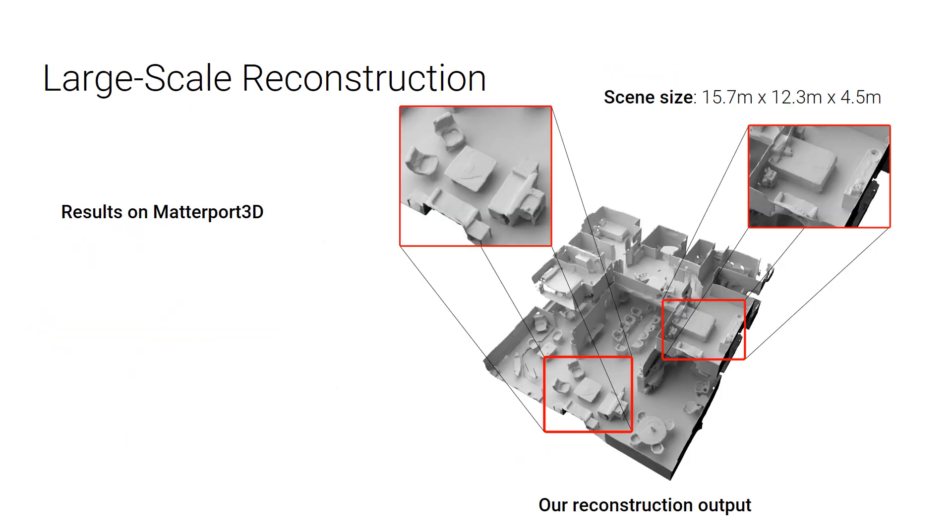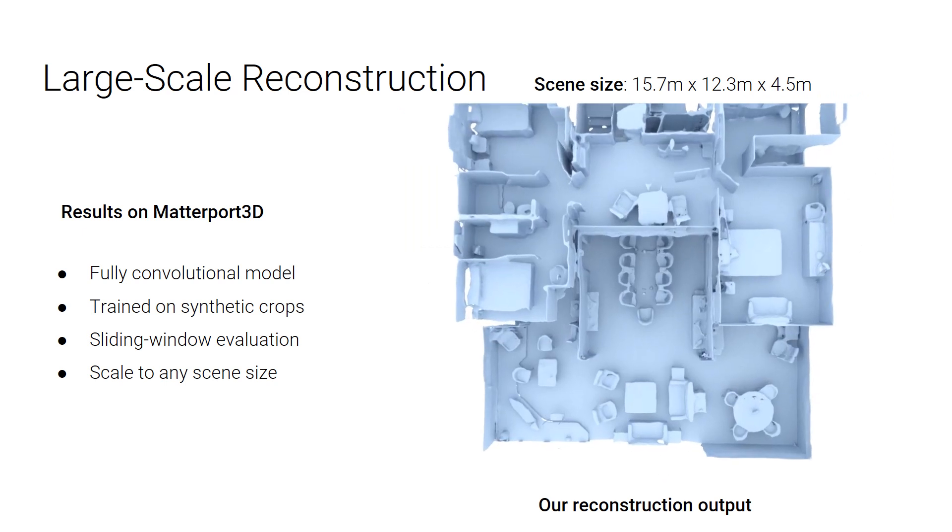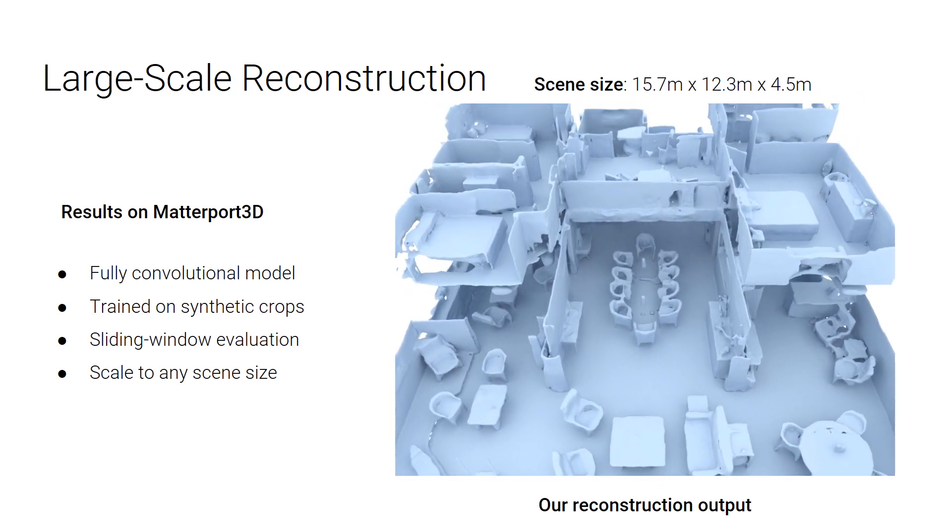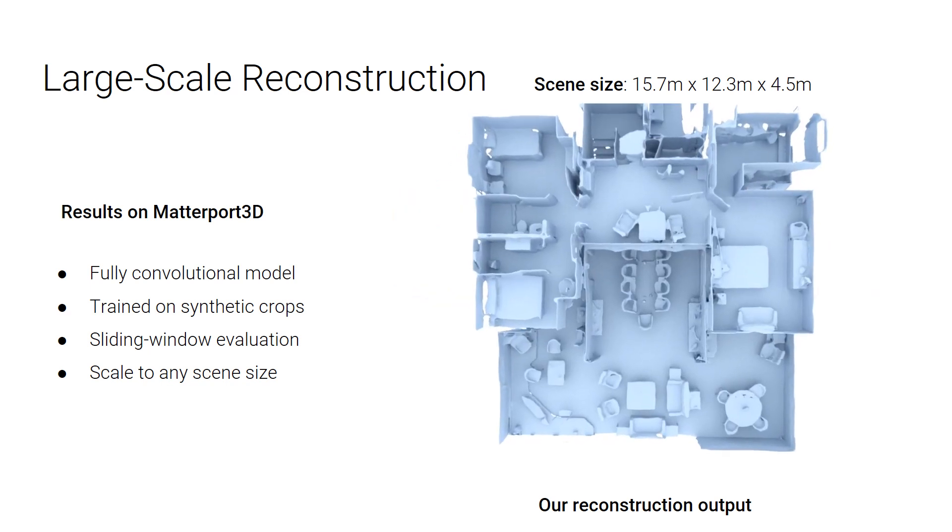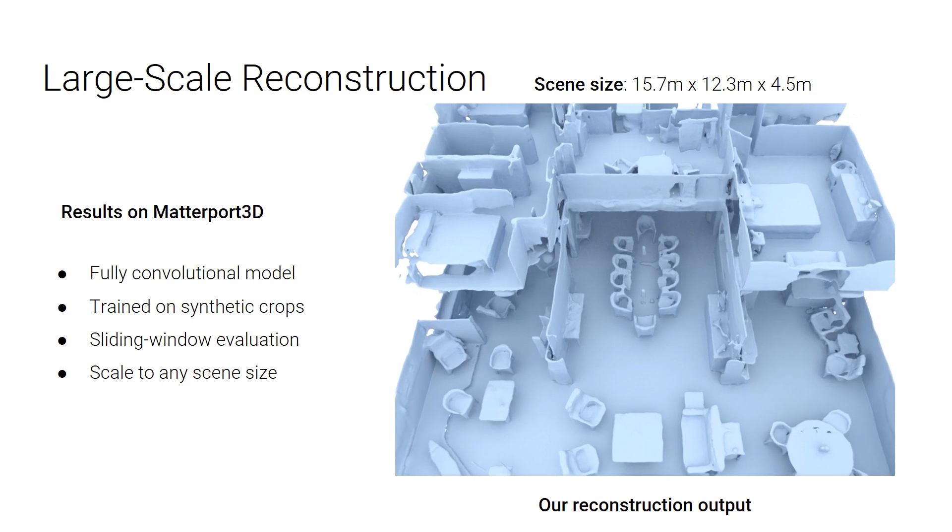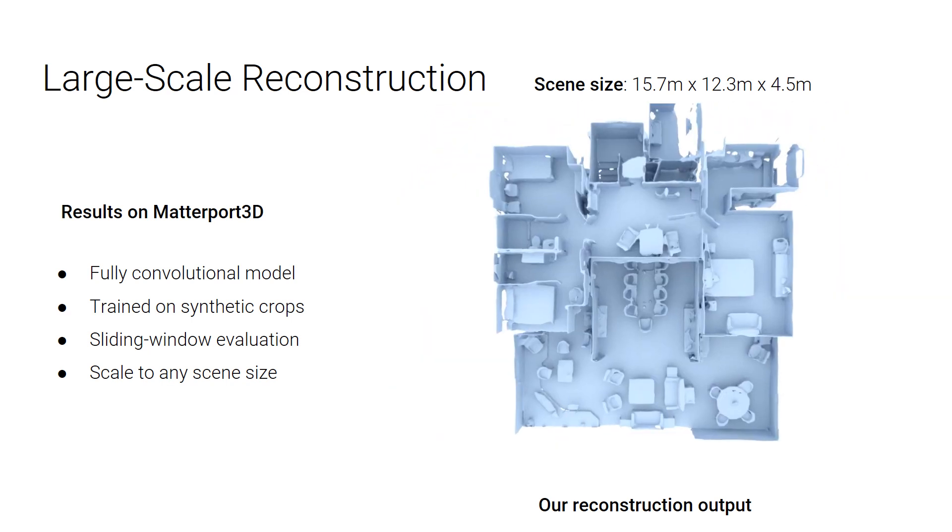We also test on very large scenes. Because we have a fully convolutional model, we can scale to scenes as large as the Matterport3D dataset. We trained on small crops from our synthetic room dataset, and evaluate on such a large scene in the sliding window manner. This fully convolutional approach can scale to any scene, because we can load sliding windows into memory as we desire, and then erase them once processed. The results are then stitched together. On the right is a fly-through video for a reconstruction of a two-floor building in the Matterport3D dataset. As we can see, our method is able to reconstruct such large-scale indoor scenes with fine details by training only on synthetic crops.